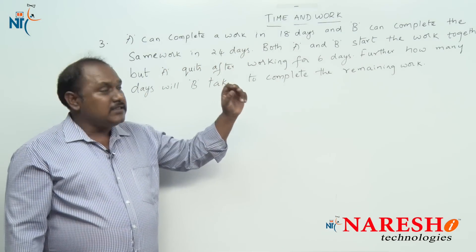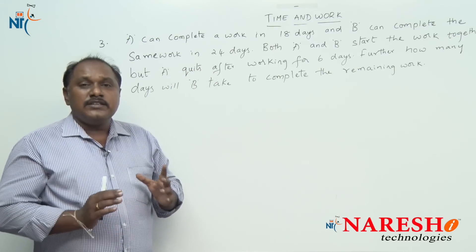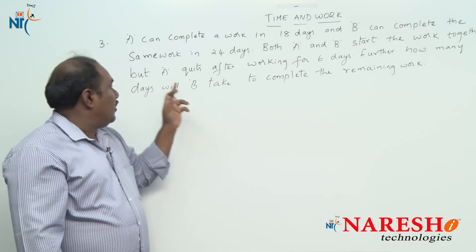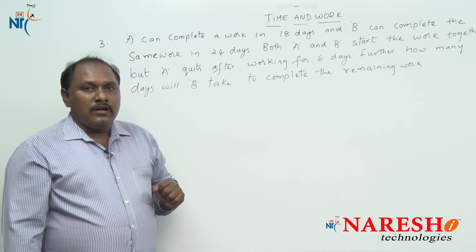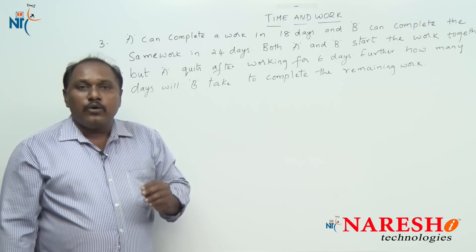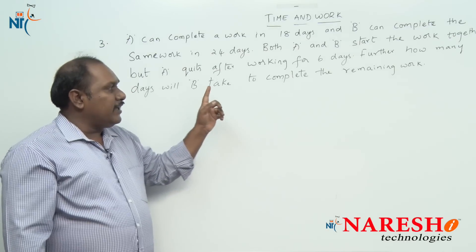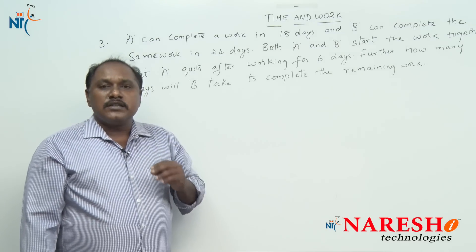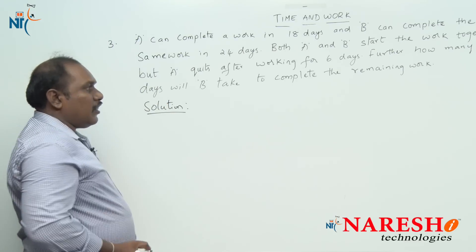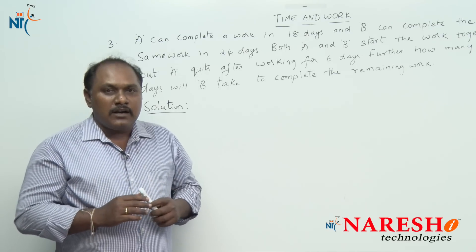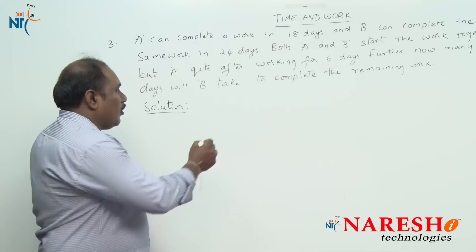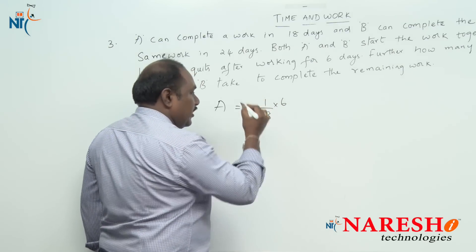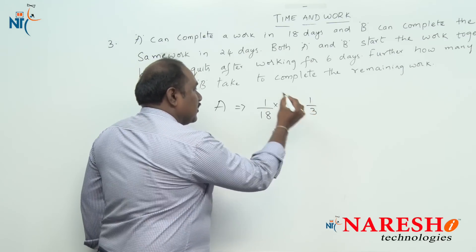A can complete a work in 18 days and B can complete the same work in 24 days. Both A and B start the work together, but A quits after working for 6 days. After A quits, how many days will B take to complete the remaining work? A is working only for 6 days. Work done by A in one day is 1/18, and in 6 days he does 6/18, which is one third of the work.